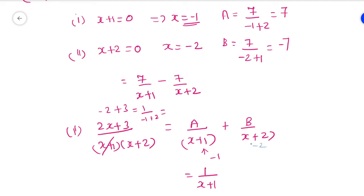Next to find B, the denominator gives x equals minus 2. Substitute everywhere except the denominator of B: 2(minus 2) plus 3 equals minus 1, divided by (minus 2 plus 1) equals minus 1. So minus 1 divided by minus 1 gives plus 1. Therefore B equals 1, and the answer is 1/(x+1) plus 1/(x+2).